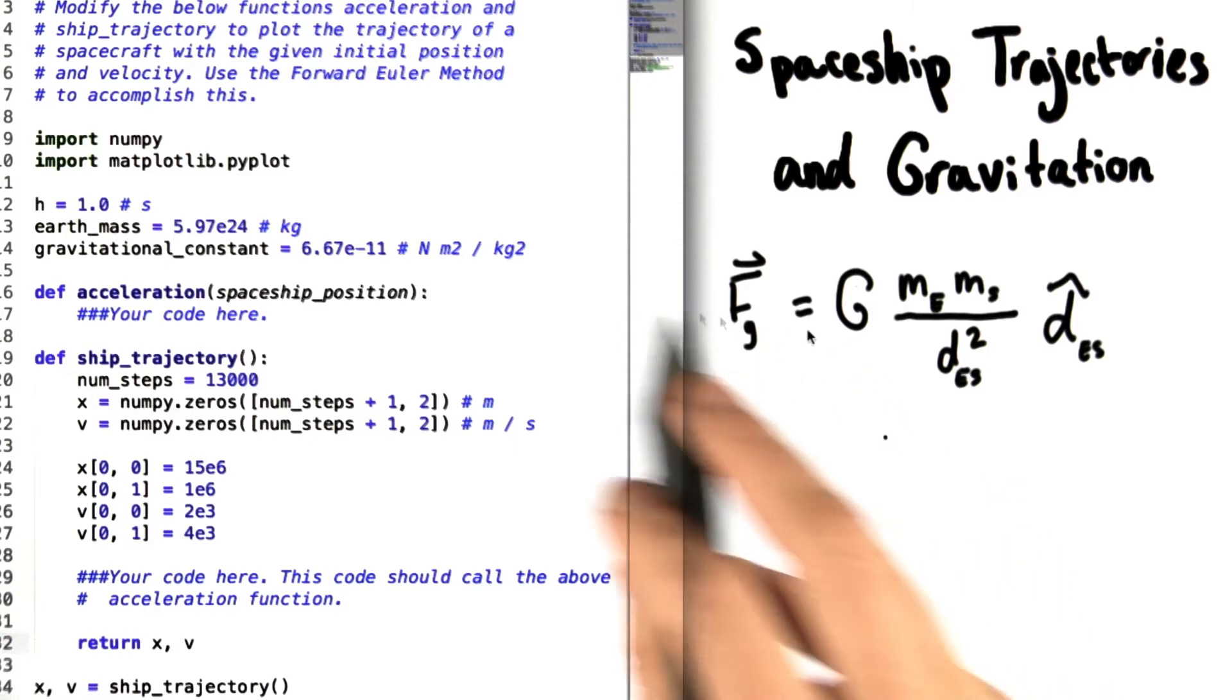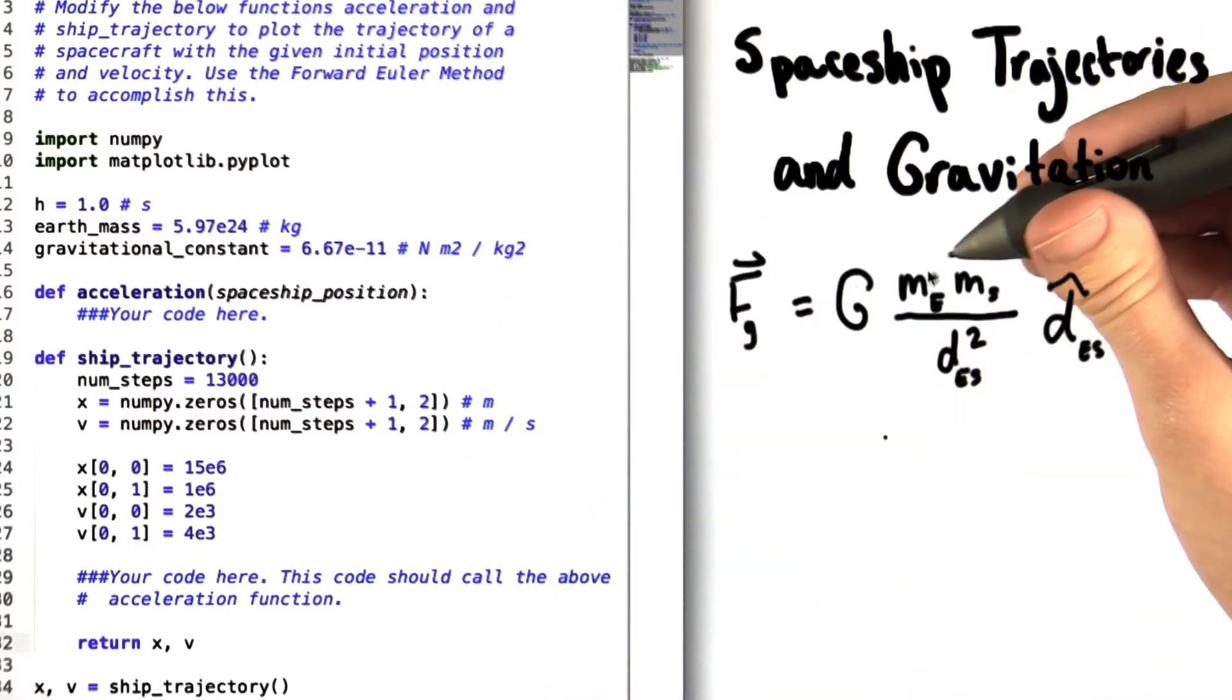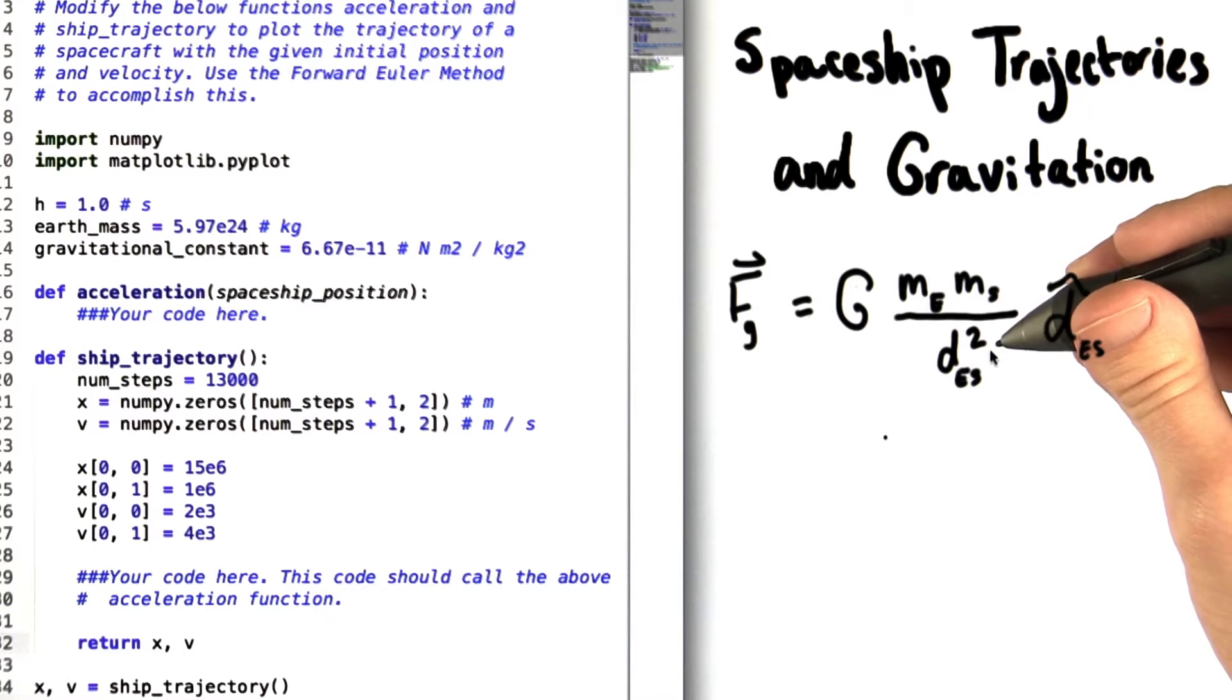This big G in the equation is the gravitational constant we've given you in the code. That's multiplied by the mass of the Earth and the mass of the spacecraft, and divided by the distance between the Earth and the spacecraft squared.